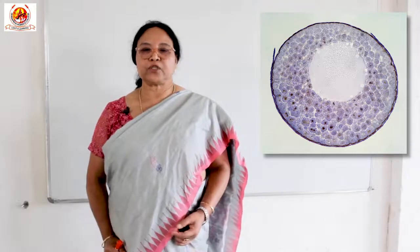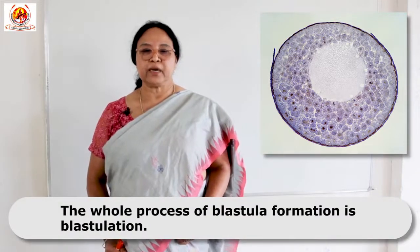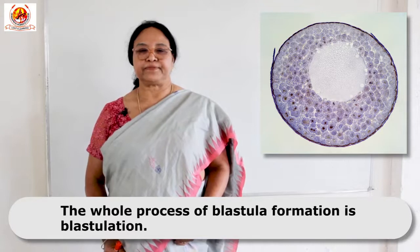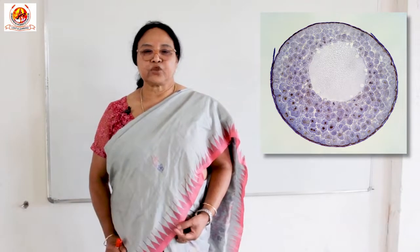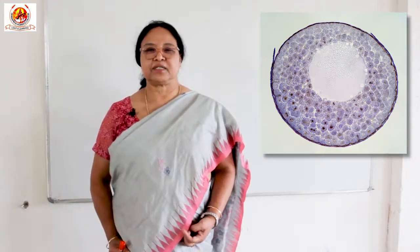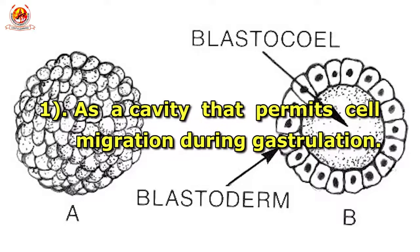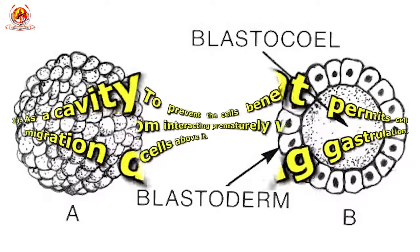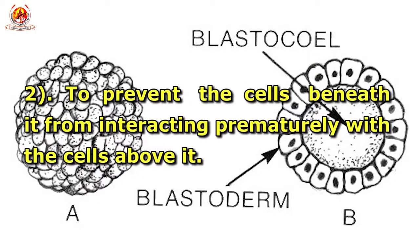The whole process of blastula formation is blastulation. The Blastocoel of blastula probably serves two major functions: number one, it is a cavity that permits cell migration during gastrulation; number two, to prevent the cells beneath it from interacting prematurely with the cells above it.